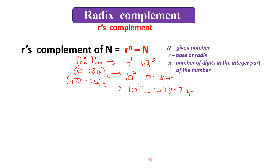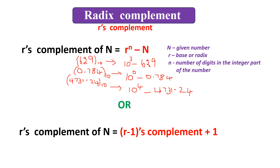There is another method to find the R's complement. First, find the R minus 1's complement of the number, then add 1 to that result. The 1 should be added only to the least significant bit.